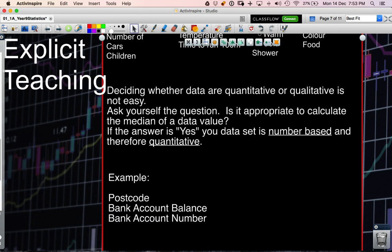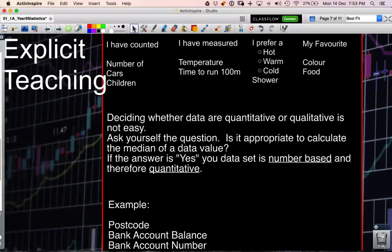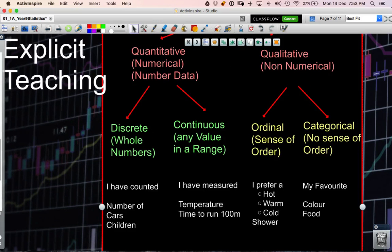The bank account balance. That's basically how much money I have in the bank. If I had a number of accounts then yes it would make sense because I would be able to work out the median of all the values, the amount of money that I have in the bank. So yes this would be a number value, it would be discrete because you'd have either whole dollars or dollars and cents.